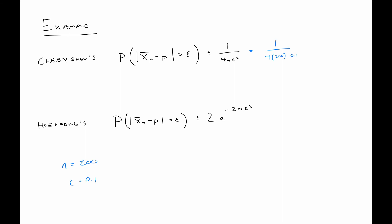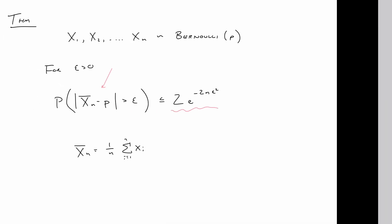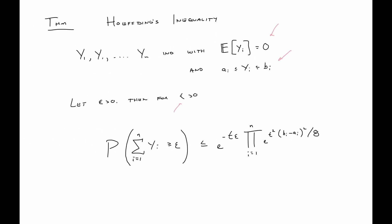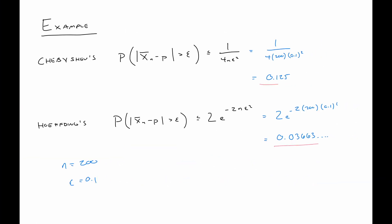And then for this one we have 2e to the minus 2 times 200 times 0.1 squared, and that works out to be something like 0.03663 and a bunch more digits. But what we can see is this inequality gave us a sharper bound than this inequality, and again that's because we have a bunch more conditions here, and when you have more conditions you can get a sharper result. Kind of how that works.